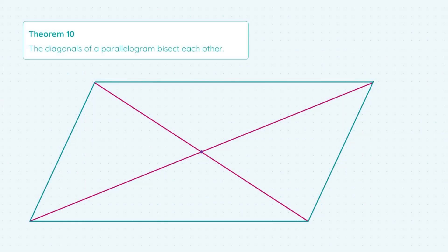All that's meant by the word bisect here is cutting in half essentially. So in the case of our diagonals we just mean that they cut each other in half where they cross.